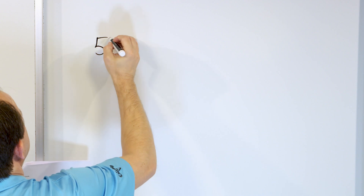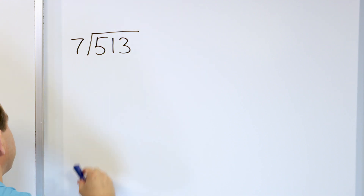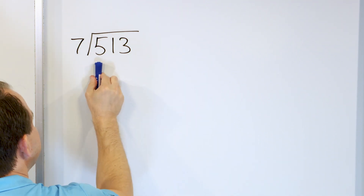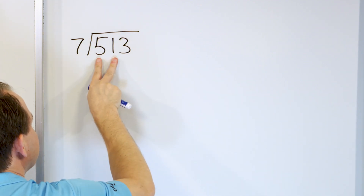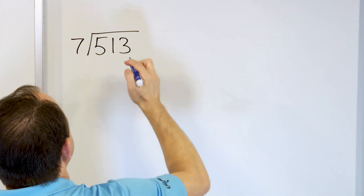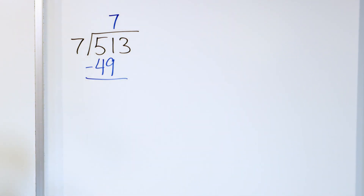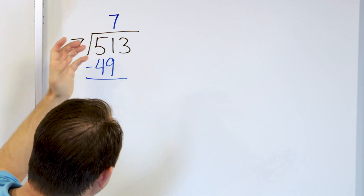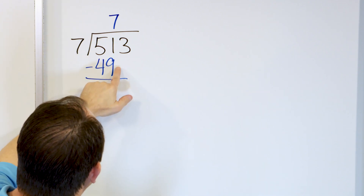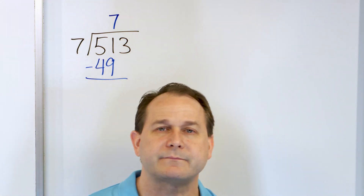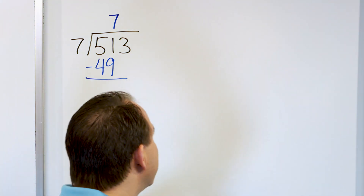Almost to the halfway point. What about 513 divided by 7? First digit — 7 times 1 is 7, too big, so consider 51. 7 times 7 is 49, and 7 times 8 is 56 — that's too much. So 7 times 7 is 49. Multiply, write the 49 down and subtract. Instead of borrowing, let's start at 49 and count up: 50, 51 — there's only a difference of 2 between those numbers.